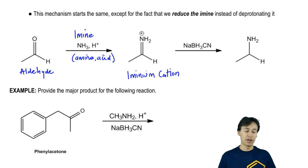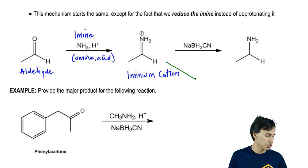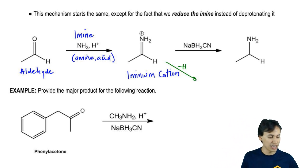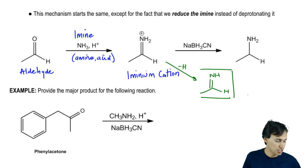Usually what would happen is if we wanted to just make an imine, we would deprotonate. Usually we would use some kind of base or a conjugate to deprotonate, take away the H, and you would usually get the imine that looks like this: NH, carbon, H, and we'd be done. This is called your imine.